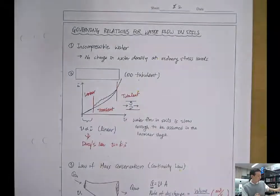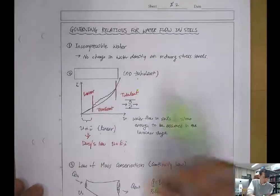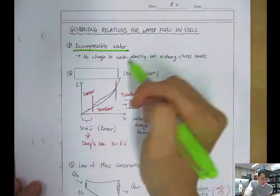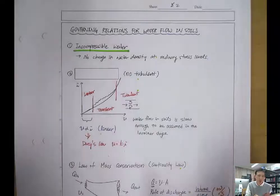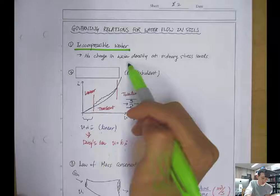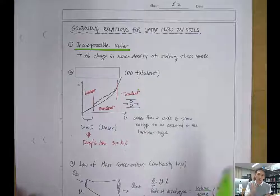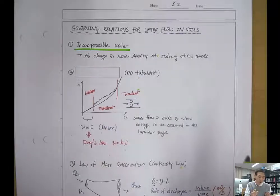Before we talk about that, we need to learn some governing relations for water flow in soils. The first one is the incompressible water assumption. This means that water density at 4°C, 20°C, or 30°C is not that different from each other, so we can assume constant water density — no change in water density at ordinary stress and temperature levels. The water density at one kilometer deep is not very different from at the surface, so that's our assumption here.